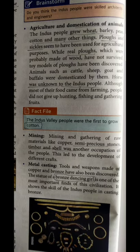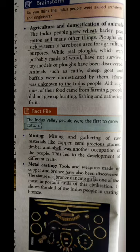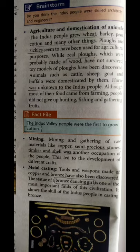These people are the first who gave us cotton. Ploughs and sickles seem to have been used for agriculture. Along with farming, people of the Indus Valley Civilization preferred the domestication of animals — cattle, sheep, goat, and buffalo.